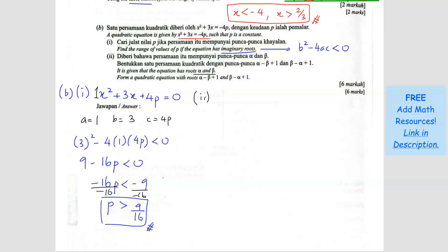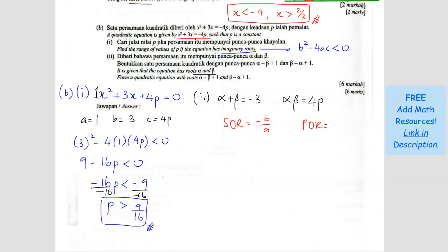The equation has roots alpha and beta. We already have A, B, C. The sum of roots: alpha plus beta equals negative b over a, which is negative 3 over 1, so it equals negative 3. The product of roots: alpha times beta equals c over a, which is 4p over 1, so it equals 4p. Remember the formula: negative b over a, c over a — 'negative baca, coa'.